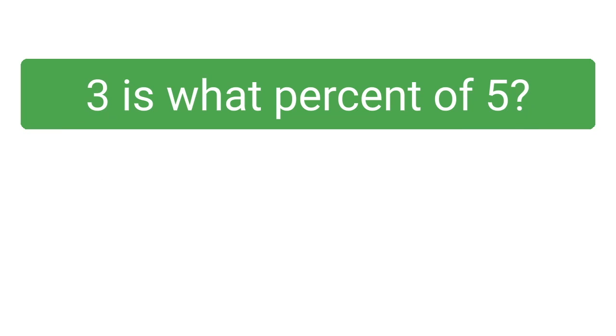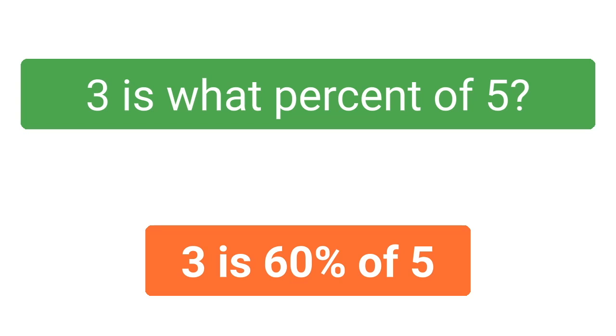3 is what percent of 5? We can make 5 into 100 by multiplying 5 times 20, and that means we also have to multiply the 3 times 20. So 3 is 60 percent of 5.